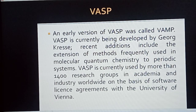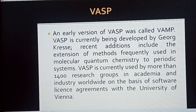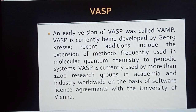An early version of VASP was called VAMP. VASP is currently being developed by Georg Kresse, whose work includes the extension of methods frequently used in molecular quantum chemistry. VASP is used by more than 1,400 research groups in academia and industry worldwide under a software license agreement with the University of Vienna.